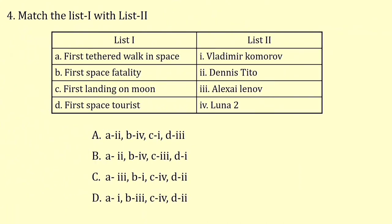Match list 1 with list 2. First tethered walk in space was by Leonid Komoro. First space fatality was Alexei Lenov. First landing on moon was Luna 2. First space tourist was Dennis Tito. So the correct answer is option D.